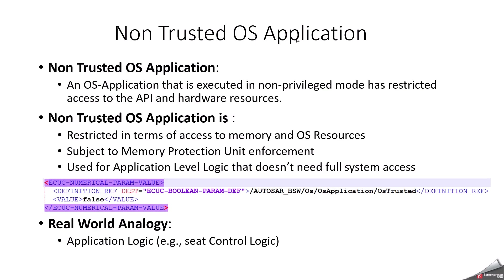Then what is non-trusted OS application? Its access to OS services and resources is restricted by a protection mechanism. The best use case is less critical or third-party software. It is limited to its own memory partition and has restricted access — some services may require trusted function called wrappers. According to the protection mechanism, this requires runtime checks and calls are also monitored, and it runs in user mode, that is called unprivileged or non-privileged mode.